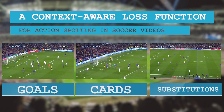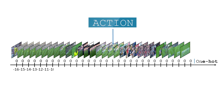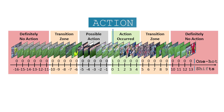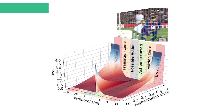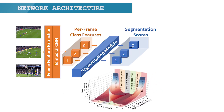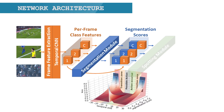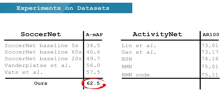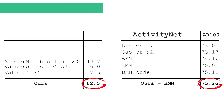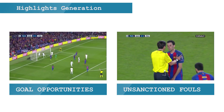Let's now recap what we've seen. Our objective is to retrieve action spots in untrimmed video sequences. To do so, we model the context surrounding an action. The labels are transformed from action spots to time shifts, defining different time segments around the action. Based on these segments, we designed a temporal segmentation loss that smoothly imposes a high segmentation score after an action occurred. Our network extracts features up to the segmentation module, then the spotting module predicts the classes and exact frames of the actions. On SoccerNet we beat every other method by far, and we also show improvements on ActivityNet. Our loss also enables automatic highlight generation. Thank you very much for watching — feel free to contact us if you have any questions.